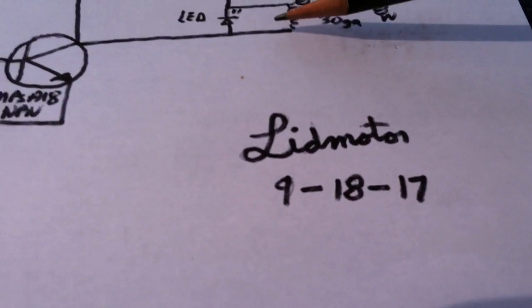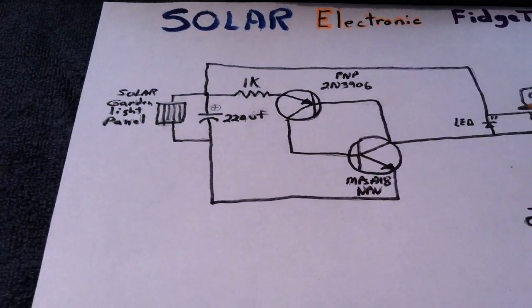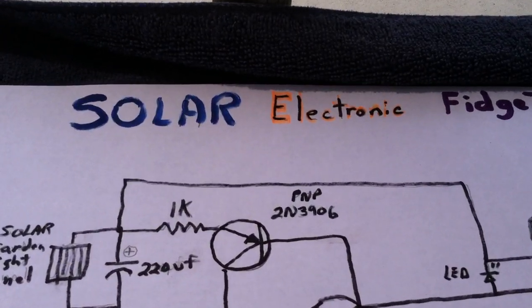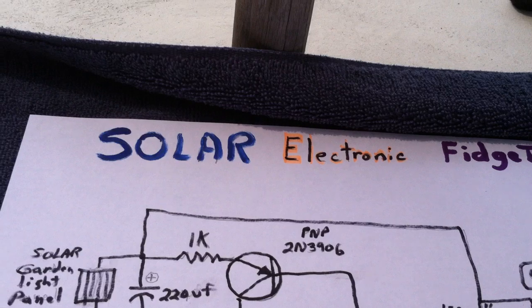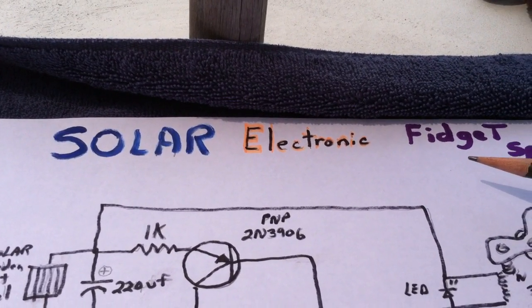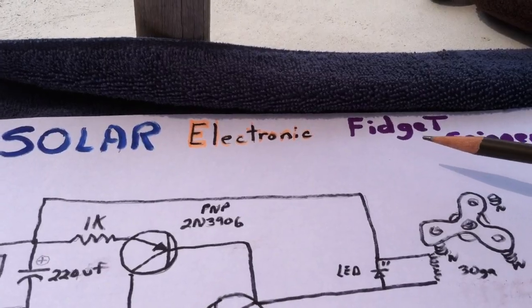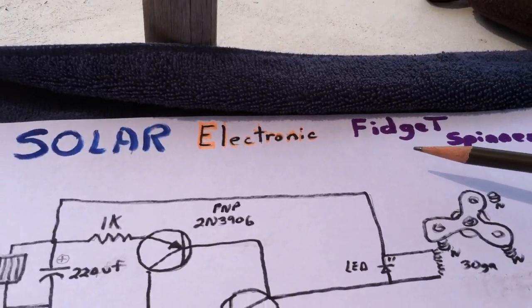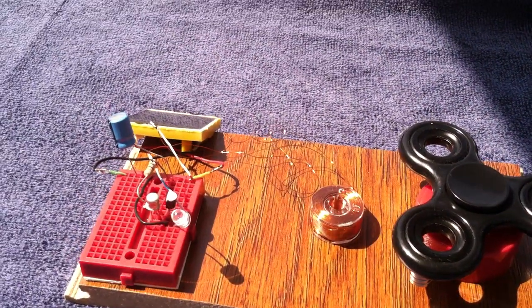Today is the 18th of September 2017. I'm just calling this the solar electronic fidget spinner. There's a ton of them on YouTube, these electronic spinners, but this is just my little version of it here.